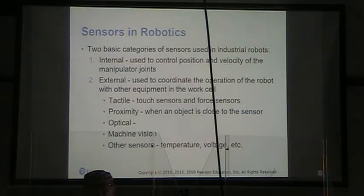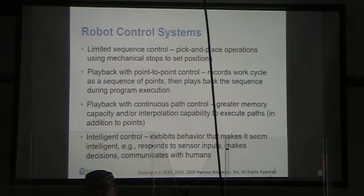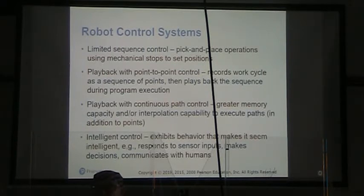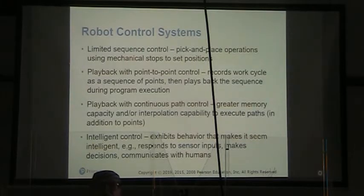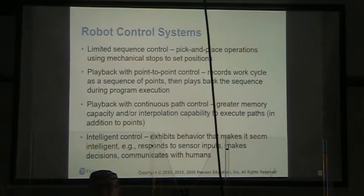When we talk about robot control systems, we may have limited sequence control — usually pick and place operations where mechanical stops set positions, either physical stops or limit switches. We can also have playback with point-to-point control, where we record the work cycle as a sequence of different points.